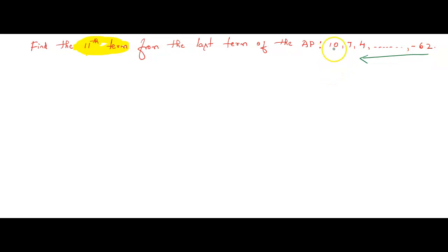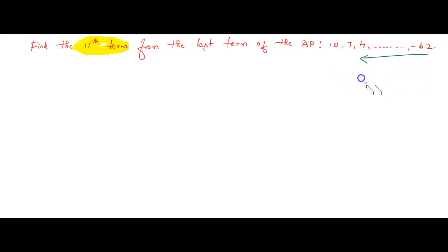Always we used to go from 10, 7, 4 from left to right, but here they are asking you to solve the problem from right to left side. You have to come from right side to left side. All the problems we have been solving from 10 — we are moving in this direction. But now we have to solve the problem from the last term.